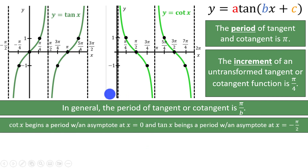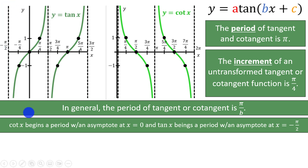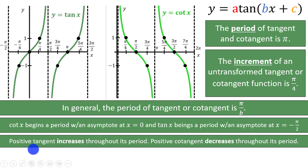At x equals 0, cotangent is just beginning a period and has an asymptote. That's different from tangent, which is actually in the middle of its period at x equals 0. I like to think of the period of tangent as starting at the asymptote at negative pi over 2. A positive tangent function will increase throughout its period, while a positive cotangent function will decrease throughout its period. You can see that reflected in the two graphs we have here. If tangent is positive, we will increase from asymptote to asymptote, and for cotangent, we will decrease from asymptote to asymptote.